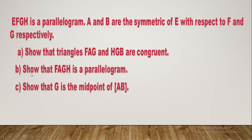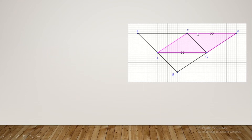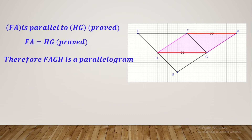Now let's move to part B. They are asking us to show that FAGH is a parallelogram. We have just proved in part A that HG and FA are equal and parallel to each other. Therefore FAGH is a parallelogram, since its opposite sides are equal and parallel.